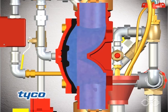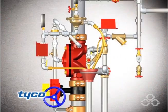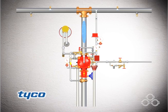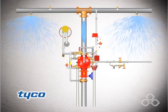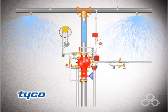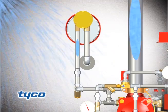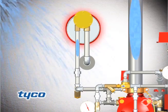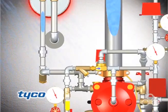The water supply pressure then forces the diaphragm open, permitting water to flow into the system piping and spray from all open sprinklers or nozzles, as well as through the alarm trim to actuate the system alarms.